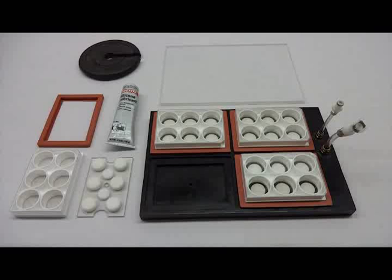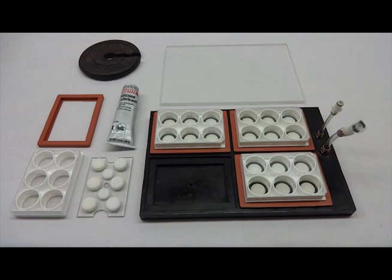To assemble your FlexCell Tension base plate for use with six well culture plates, you will need your black base plate with attached tubing, the four rubber gaskets, your four desired loading stations, four culture plates, silicone lubricant, and the clear acrylic window.